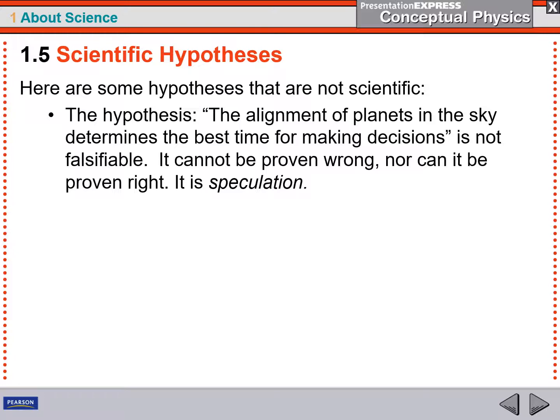Now here's some statements that are not scientific. The alignment of planets in the sky determines the best time for making decisions. That statement is not falsifiable. It's just a matter of speculation. You can't prove it wrong. How do you know if you made the best decision or not? Because you don't know all possible outcomes of any decision that you make.